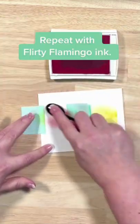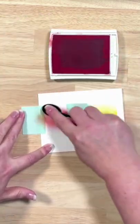We're going to repeat all of this with the Flirty Flamingo ink and then we're going to remove our post-it notes. Do not worry about what this looks like.